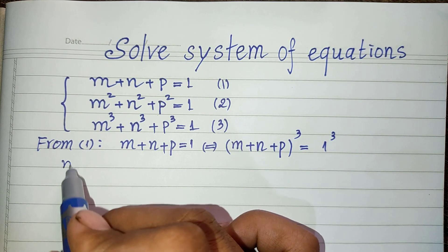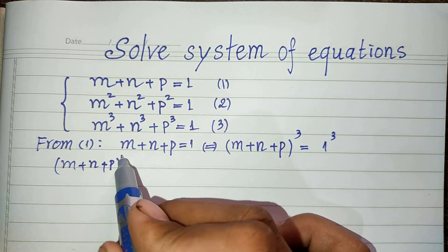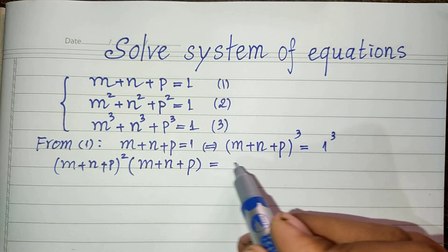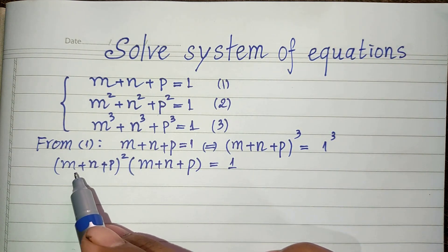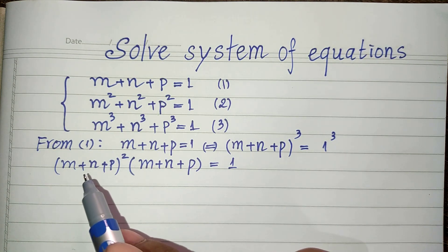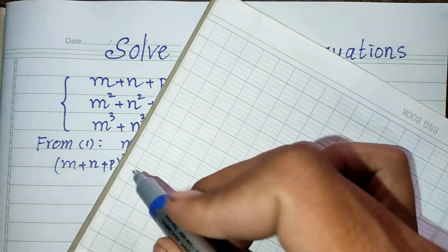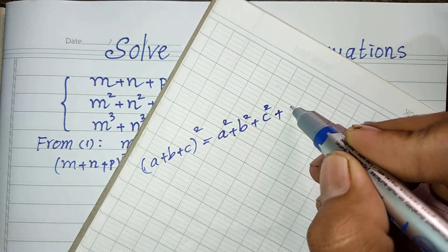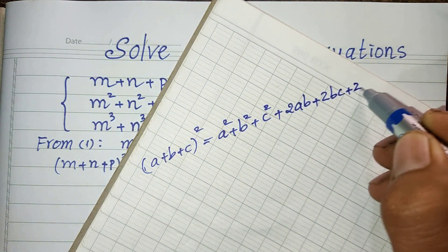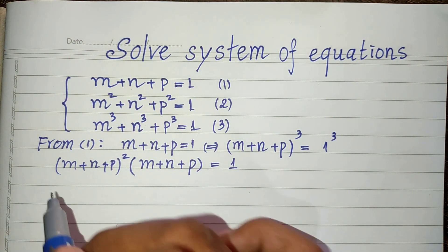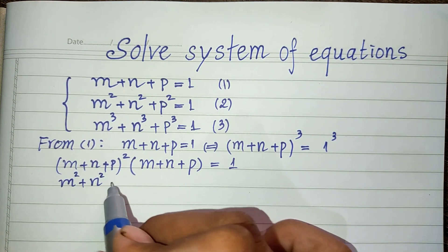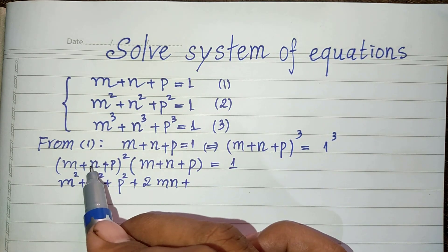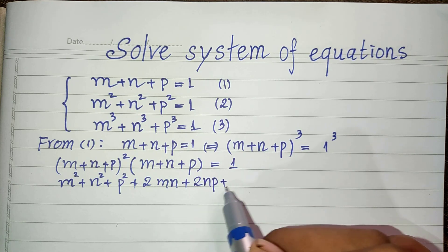We can write this as m plus n plus p squared, multiplied by m plus n plus p, equal to 1. Now we expand using the rule: (a + b + c)² equals a² plus b² plus c² plus 2ab plus 2bc plus 2ac. So we get m² plus n² plus p² plus 2mn plus 2np plus 2mp, all multiplied by m plus n plus p, equal to 1.